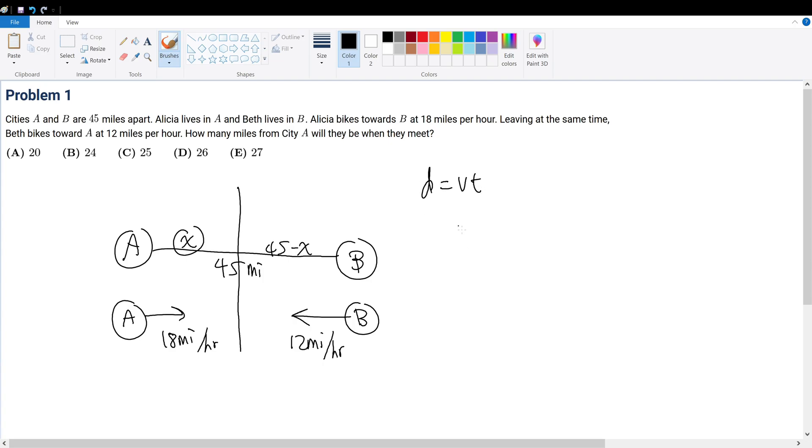By the time Alisa reaches x, that equals her velocity of 18 times her time t. By the time Beth reaches the meeting point, she will have traveled 45 minus x miles, which equals 12 times her time t.